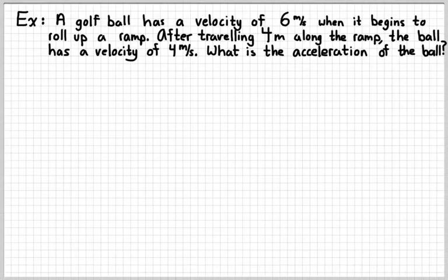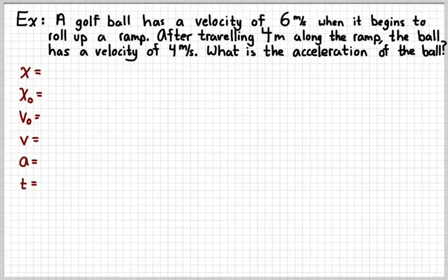So let's look at another example. Suppose that you have a golf ball. It's rolling at a velocity of six meters per second when it starts to roll up a ramp. If you've ever played putt-putt golf, this may be a familiar situation to you. So after traveling four meters along the ramp, the ball now has a velocity of four meters per second. And the thing we want to figure out is what is the acceleration of the ball. Those are all the variables that we could possibly be dealing with. Press pause for a second and just see if you can fill in the variables, the givens that you know, and that that you don't know.